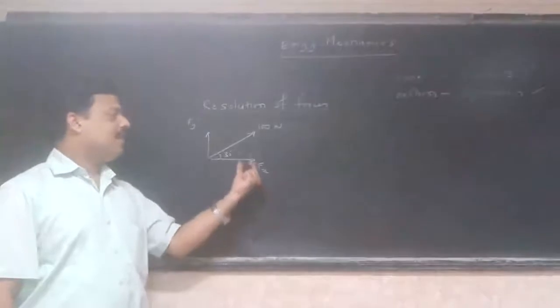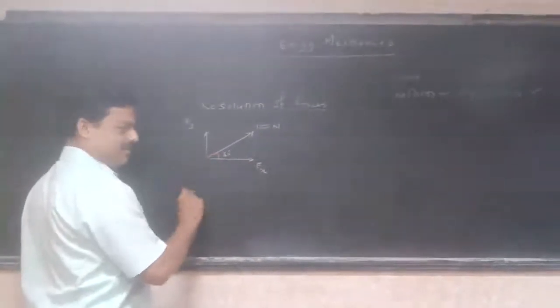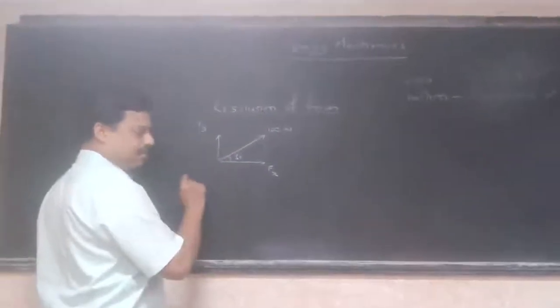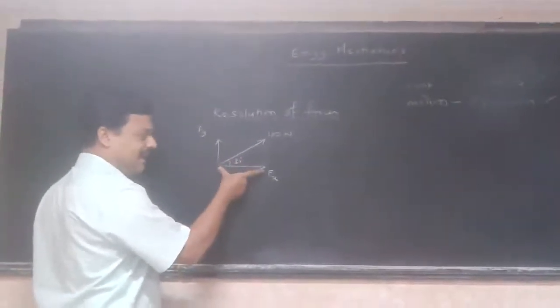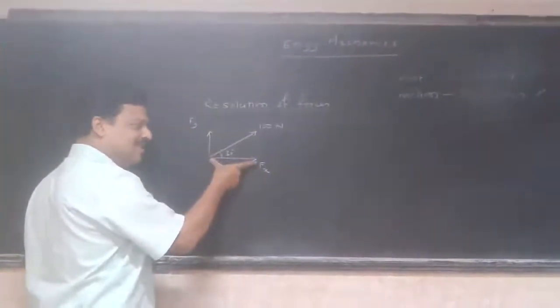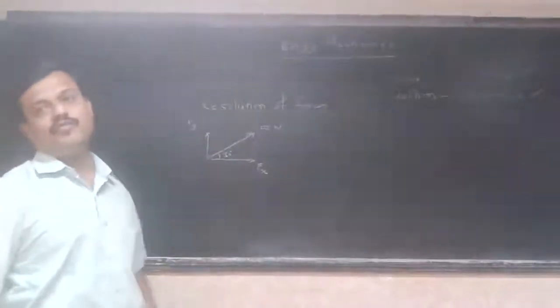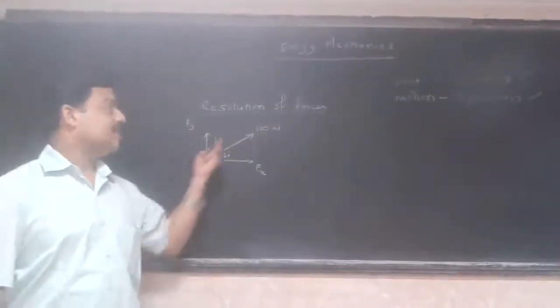How do we obtain the magnitude of this x component? For that, the angle is 30 here. We know cos 30. Cos 30 is adjacent upon hypotenuse. Now, this length represents the magnitude of fx. This length represents the magnitude of the resultant force which is 100.